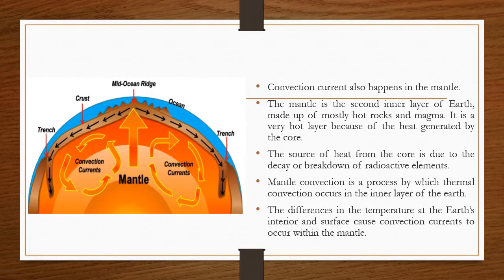The source of heat from the core is due to the decay or breakdown of radioactive elements. Mantle convection is a process by which thermal convection occurs in the inner layer of the Earth. Because of the differences in temperature between the Earth's interior and surface, it creates or causes the convection current.